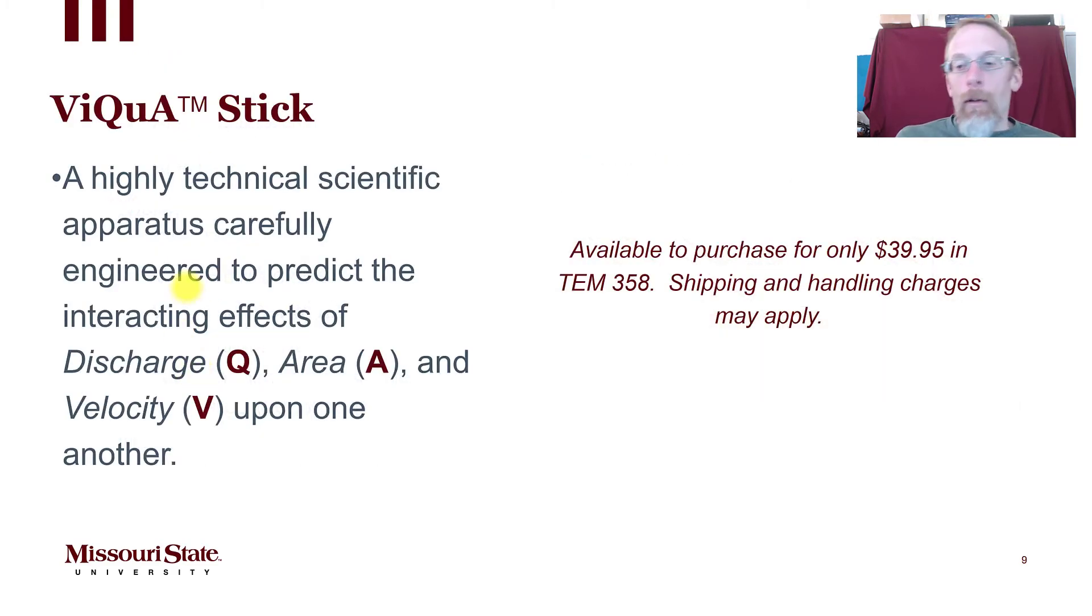Now we can think about the relationship between these three variables - discharge, area, and velocity - using a highly technical apparatus carefully engineered to predict the interacting effects of discharge, area, and velocity upon one another. It's called a ViQuA Stick. It's something that I've invented, and let's take a look at a ViQuA Stick.